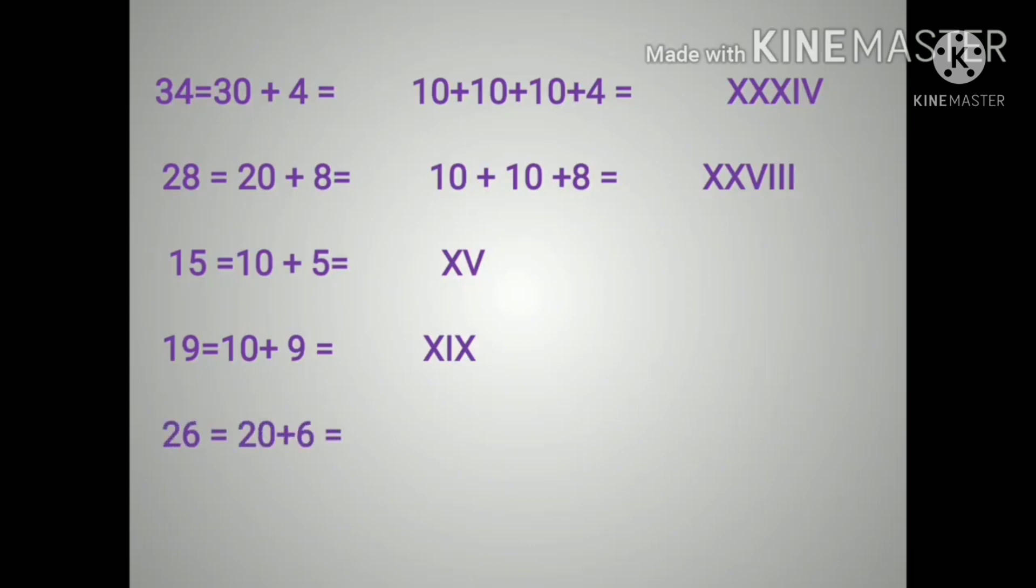Next, 26 that is equal to 20 plus 6, and 20 can be written as 10 plus 10 plus 6 which is equal to XXVI. VI stands for 6. And last one is 13 which is equal to 10 plus 3, and 10 is X and 3 is III, so the answer is XIII. So I think now it will be easy for you to write the numbers in a Roman numeral way.